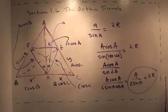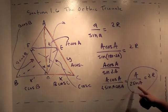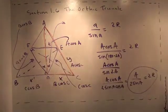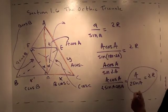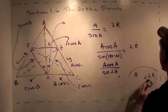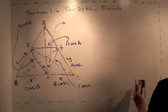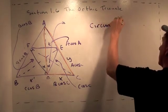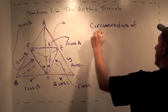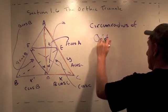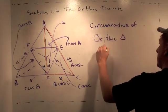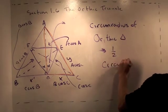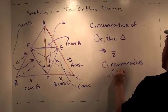But this looks a lot like A over sine A from the big triangle. And so we just learned that the circumradius of the orthic triangle equals one half the circumradius of the big triangle.